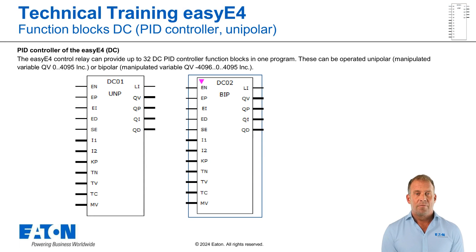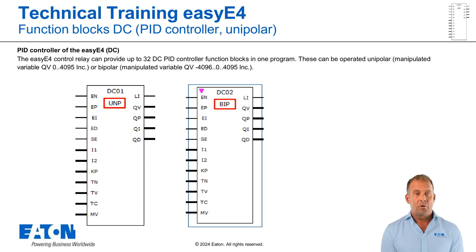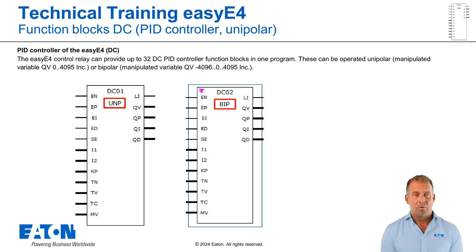The EZE4 can provide up to 32 DC PID controller modules in one program. You can choose between unipolar or bipolar operating mode in the parameters for the function blocks. In the unipolar operating mode, a manipulated variable of 0 to 4095 increments is provided. In the bipolar mode, a manipulated variable of minus 4096 to plus 4095 increments is provided.